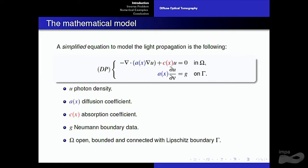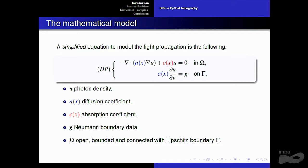A simplified equation to model the light propagation is the following diffusion-reaction equation, where U is the photon density, A is the diffusion coefficient, C is the absorption coefficient, and G is the Neumann boundary data. We assume that omega is an open, bounded, connected domain with Lipschitz boundary. A more realistic situation would be to consider a Robin condition, but all the results I will show remain valid under a Robin condition. For simplicity, we consider a Neumann condition.